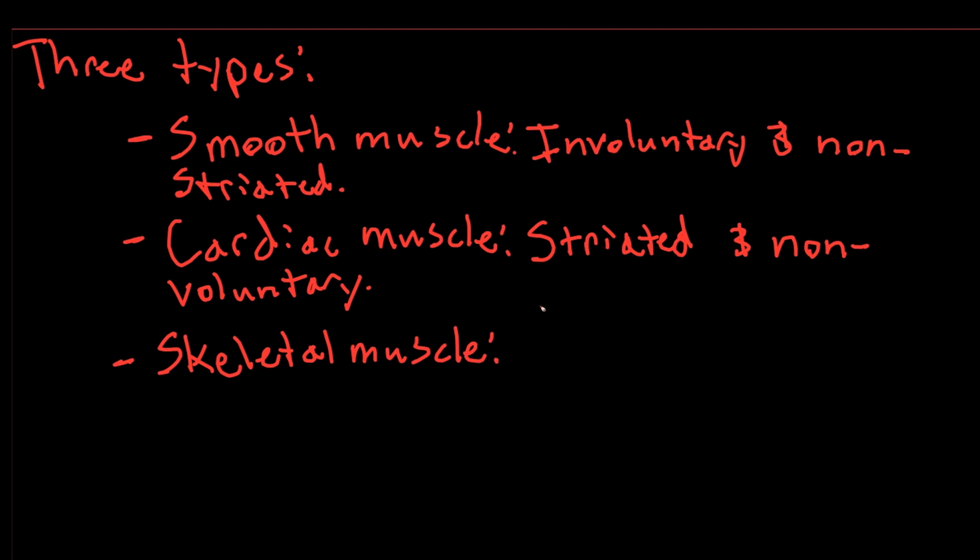Skeletal muscle is striated and voluntary. These are the muscles, probably the most famous ones, that allow you to move your arm and your hands and your legs, allow you to run. You can directly control those. If you want to make a fist, you can make a fist or open your hand. That's all voluntary.